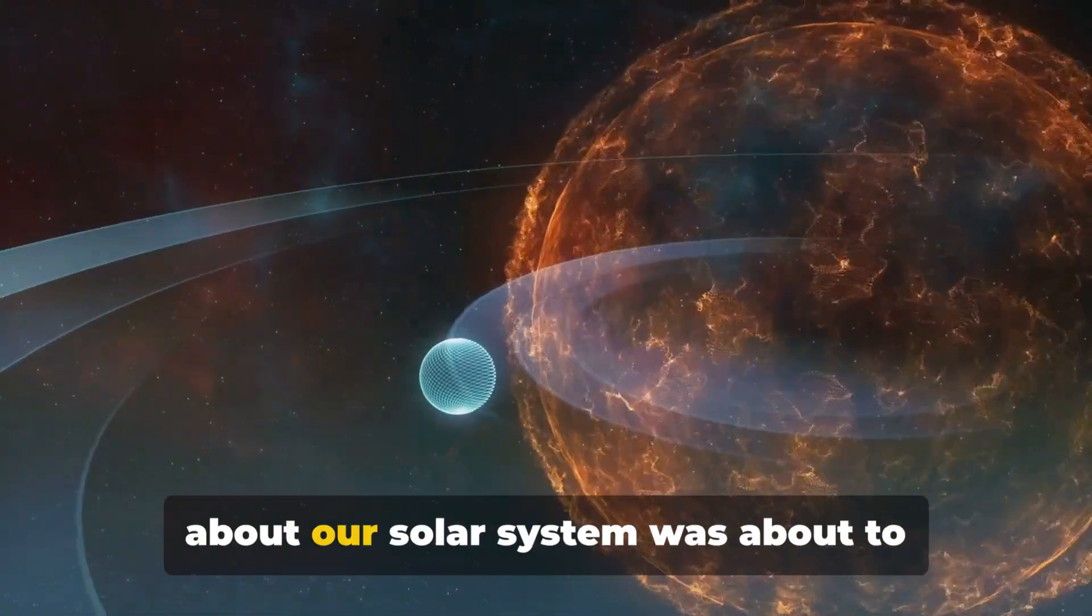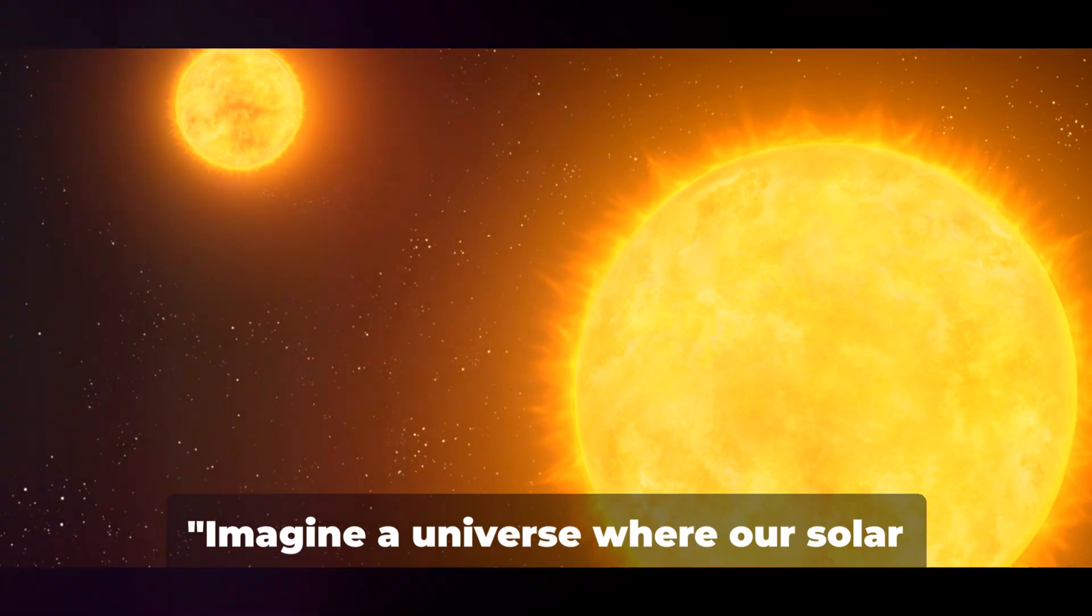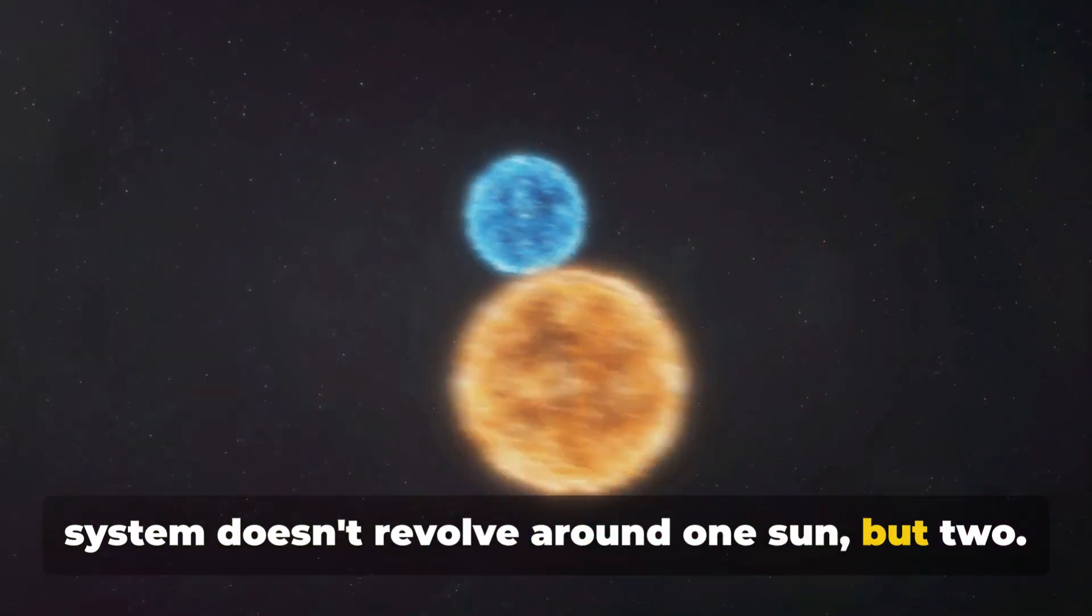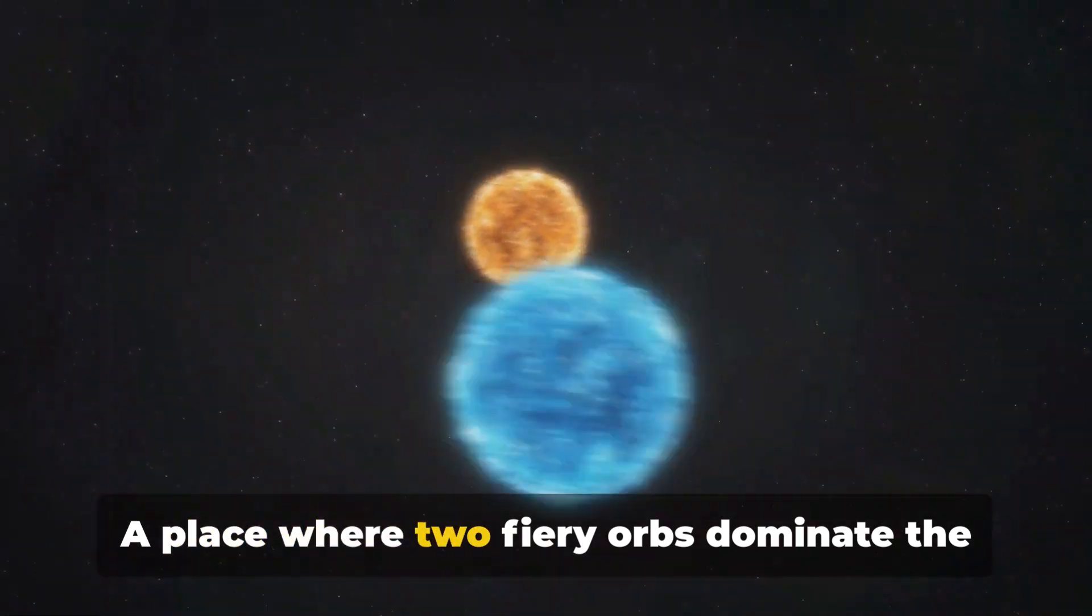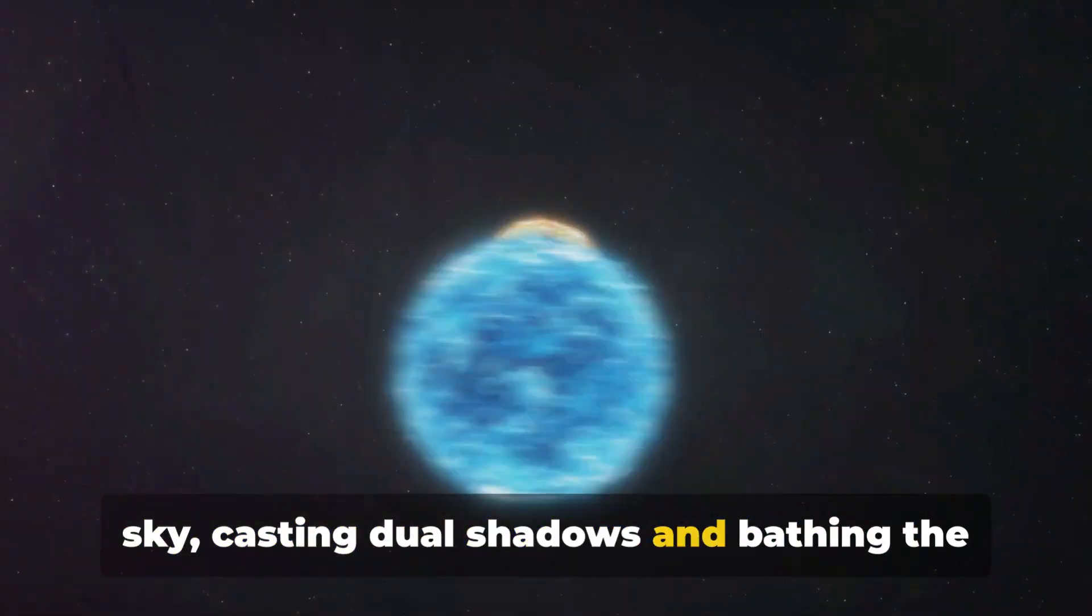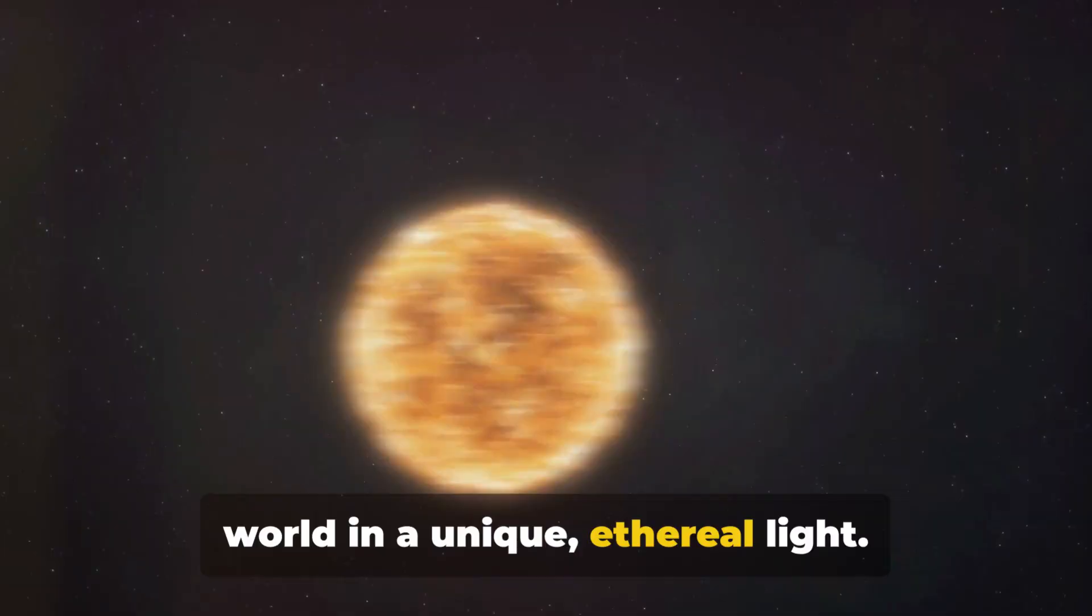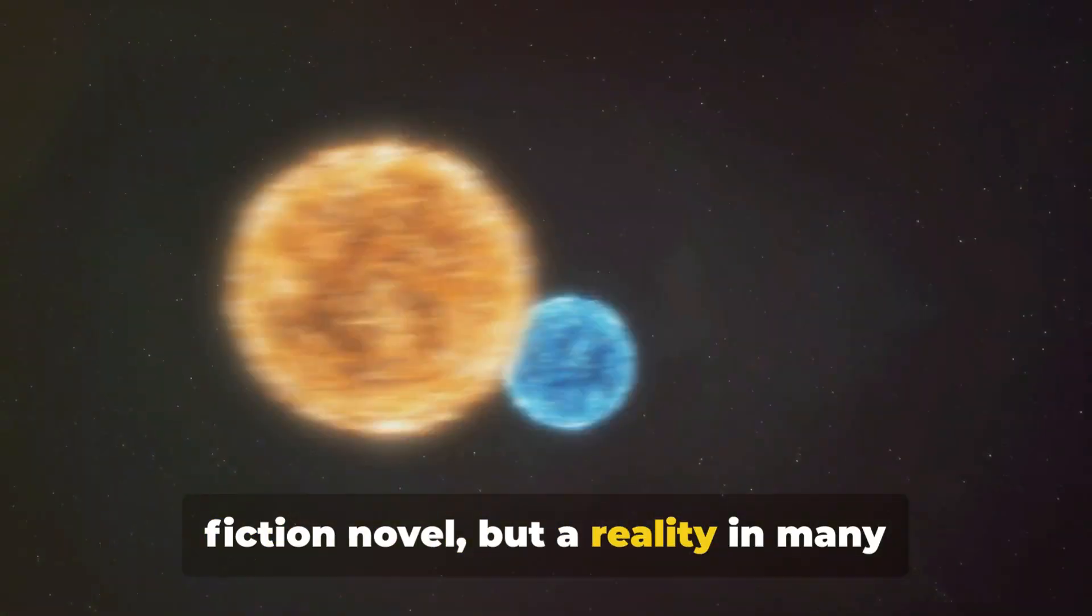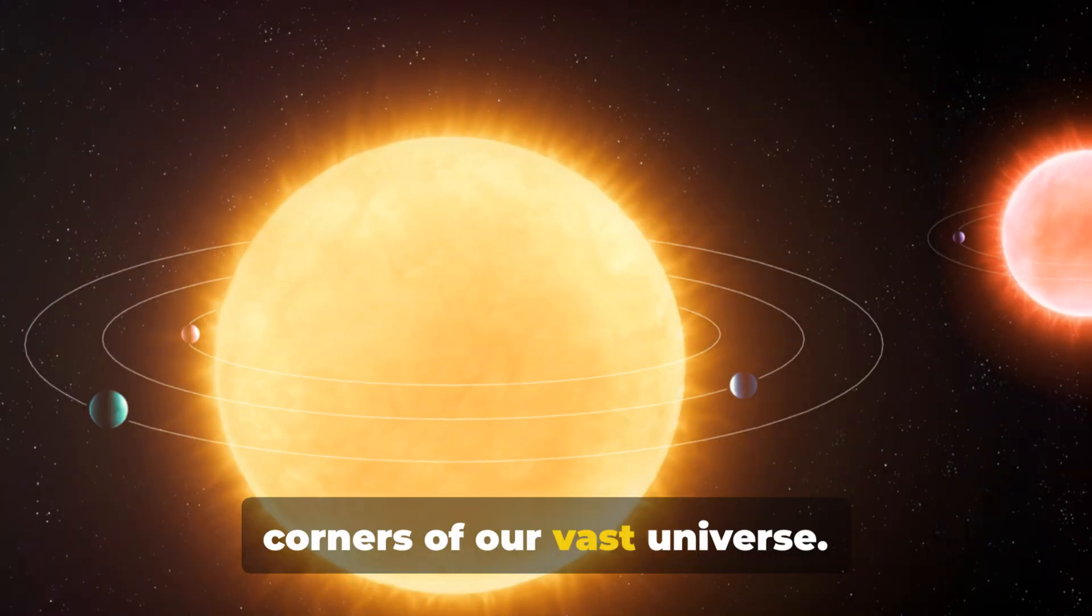But what if everything you know about our solar system was about to change? Imagine a universe where our solar system doesn't revolve around one sun, but two. A place where two fiery orbs dominate the sky, casting dual shadows and bathing the world in a unique ethereal light. This is not a scene from a science fiction novel, but a reality in many corners of our vast universe.